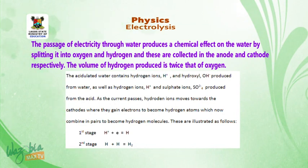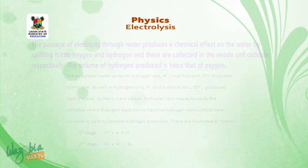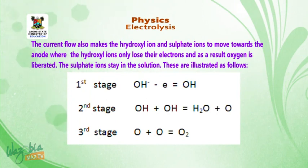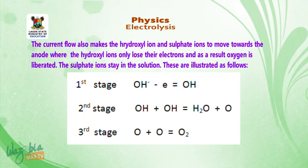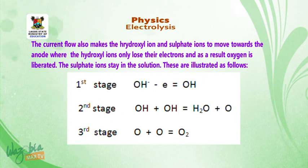These are illustrated as follows. Stage 1: hydrogen ion plus electrons gives hydrogen atoms. The current flow also causes the hydroxide ion and sulfate ion to move towards the anode, where the hydroxide ion only loses an electron, and as a result, oxygen is liberated. The sulfate ion stays in the solution. Stage 1: OH⁻ minus electron gives OH. Stage 2: OH + OH gives water plus oxygen atom. Stage 3: oxygen atom plus oxygen atom gives oxygen molecules.